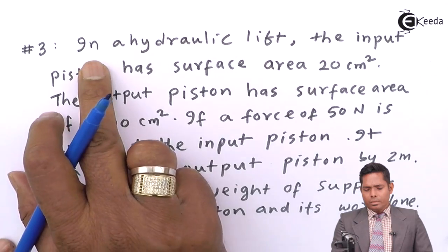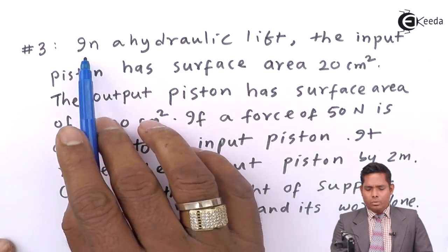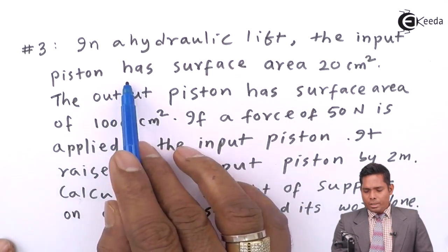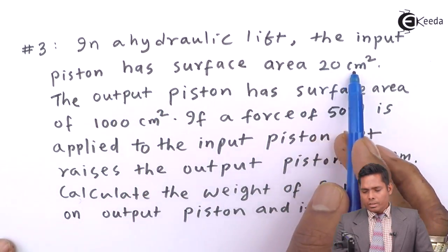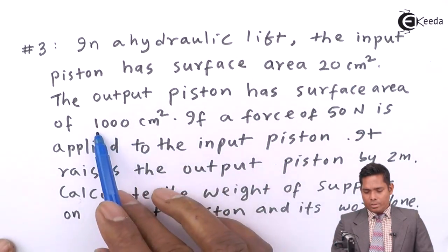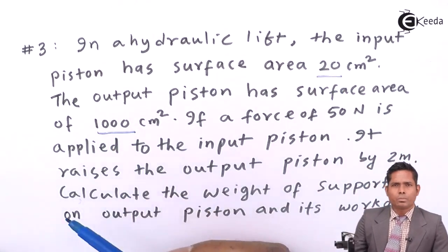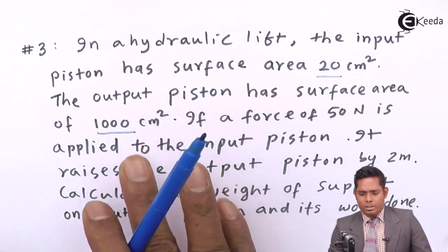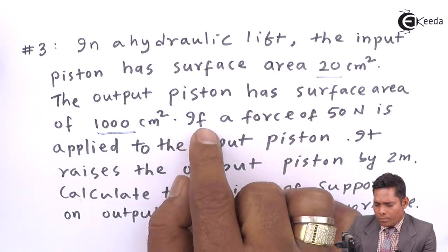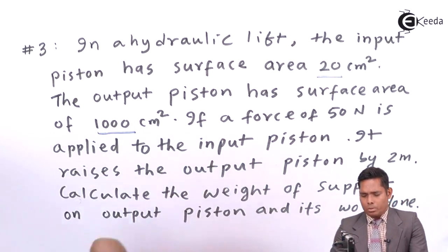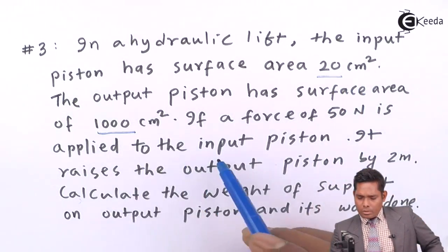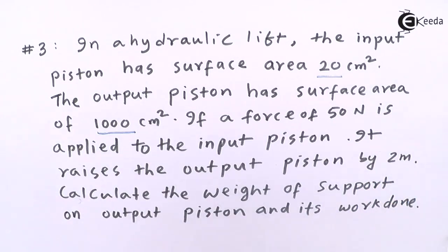In this numerical, the question says: in a hydraulic lift, the input piston has a surface area of 20 centimeters square. The output piston has a larger surface area. The wider area is the output and the narrower part is the input. A force of 50 newtons is applied to the input side.